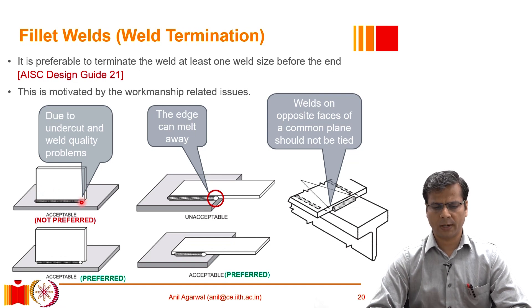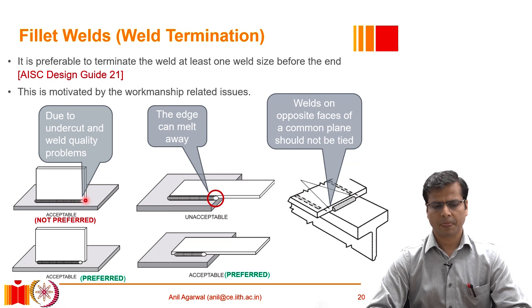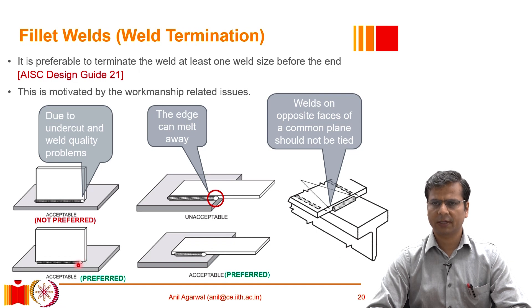Continuing the weld all the way to the edge and stopping makes the quality of the weld at that location very difficult to assess, and there is a high probability the weld quality will be poor. There may be undercut — some parent material melts and leaves a sharp corner. Therefore, it is generally preferred to stop the weld at least one weld size away from the edge. If a shorter weld requires compensation, increase the weld size. If the weld must reach the edge, it is much better to continue all the way around.